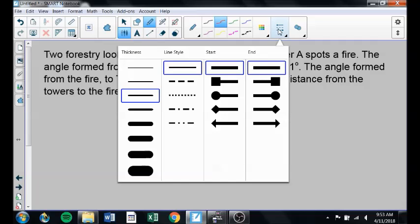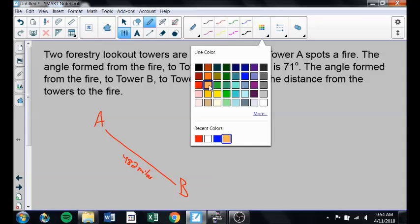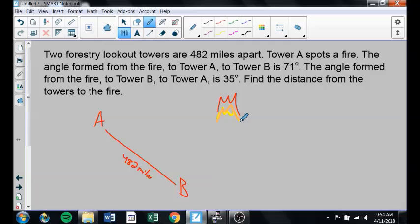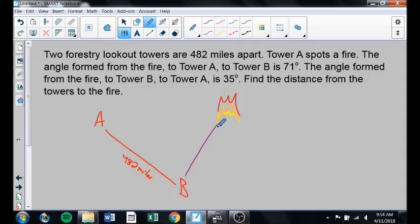Okay, here's a new problem. Two forestry lookout towers are 482 miles apart. So I'll call this tower A, and I'll call this tower B. And this distance here is 482 miles. They're probably on top of some mountains somewhere. The angle formed from the fire, they see a fire somewhere, way out here, we'll say. This is my big scary fire. The angle formed from tower A, from the fire to tower A to tower B is 71 degrees. That means this angle here is 71 degrees from the fire to tower A to tower B. So I totally wrote that backwards.